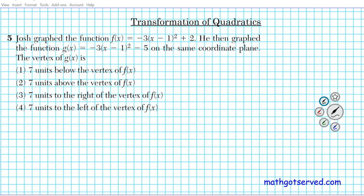For question 5 we're looking at transformation of quadratics. Problem 5: graph f(x) = −(x − 1)² + 2, then graph g(x) = −3(x − 1)² − 5 on the same coordinate plane. We have two parabolas. The question asks us to describe the location of g(x) relative to f(x) — we're looking at the movement of the vertices from f to g.